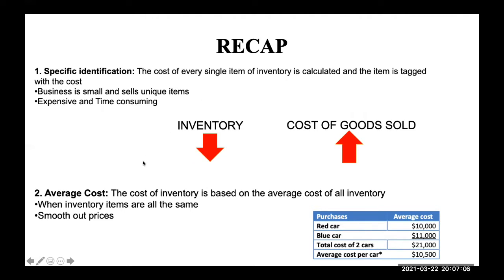On to the next one: average cost. The cost of inventory is based on the average cost of all inventory. To get the average cost, we would add up the totals and divide by the total number to get our average cost. Average cost works best when the inventory items are all the same, and the benefit is that it will smooth out our gross profit and our gross profit ratios.